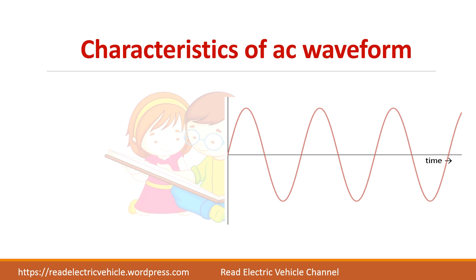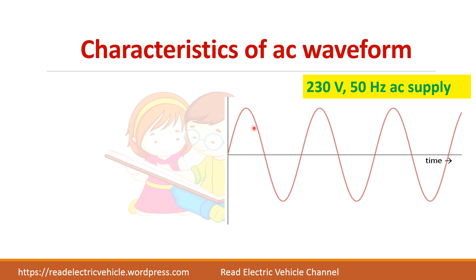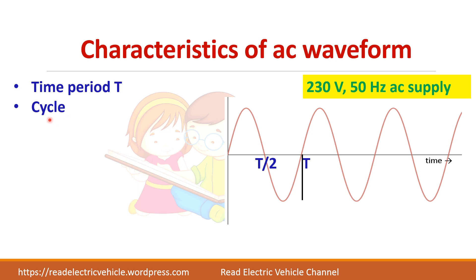Let us see the characteristics of a waveform. A sinusoidal waveform starts from 0, reaches its peak value, crosses 0, goes in the negative direction, and comes back to 0. This pattern is repeated again and again, so it is a periodic waveform. This waveform repeats after a time period T, and half of that is T/2. One such pattern is called a cycle — the pattern which repeats again and again.